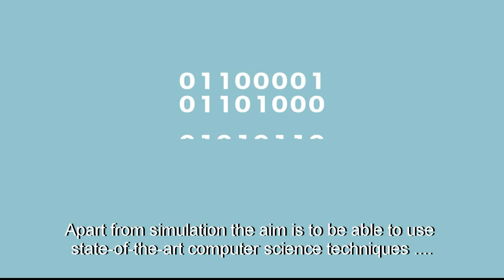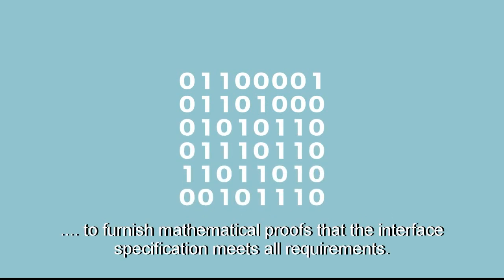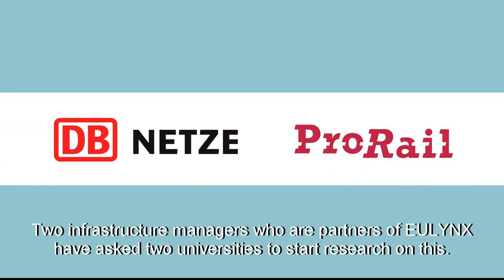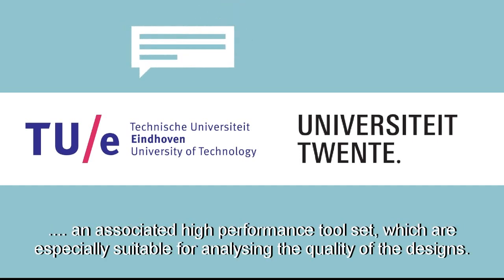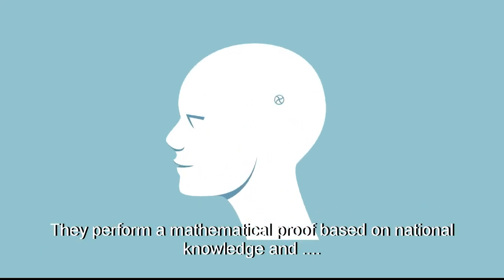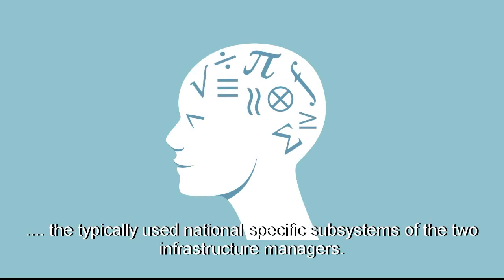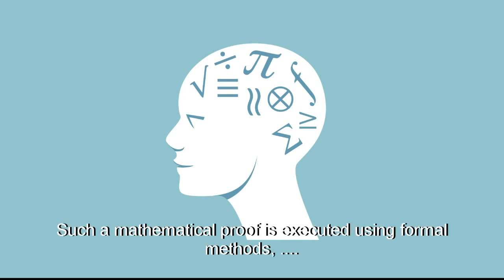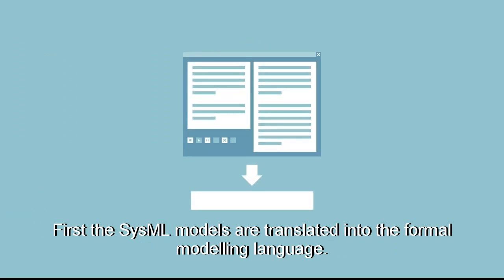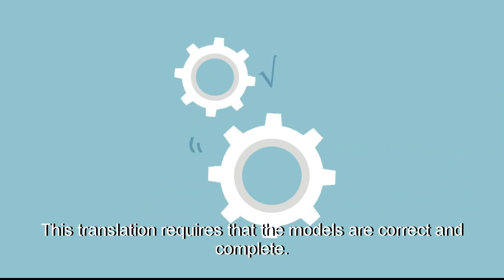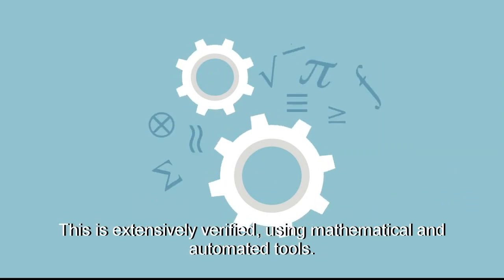Apart from simulation, the aim is to use state-of-the-art computer science techniques to furnish mathematical proofs that the interface specification meets all requirements. Two infrastructure managers who are partners of U-Lynx have asked two universities to start research on this. These two universities have developed a formal modelling language and an associated high-performance toolset, which are especially suitable for analysing the quality of the system designs. They perform mathematical proof based on national knowledge and the typically used national-specific subsystems of the two infrastructure managers. Such mathematical proof is executed using formal methods as a complement to system testing, so as to ensure correct behaviour of complex systems. The SysML models are translated into the formal modelling language, which requires that the models are correct and complete. This is extensively verified using mathematical and automated tools.